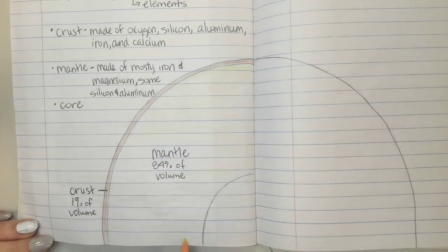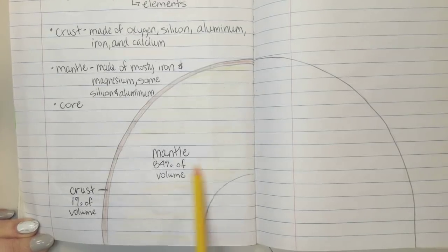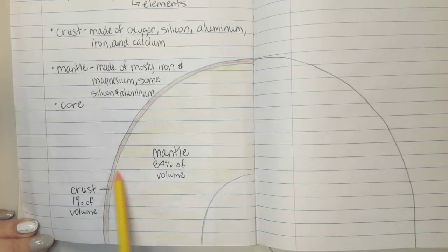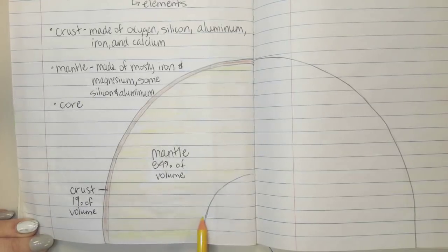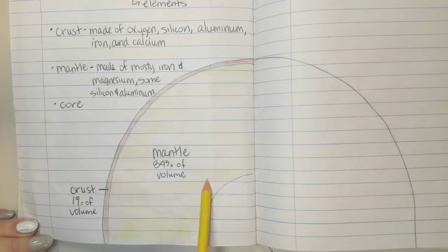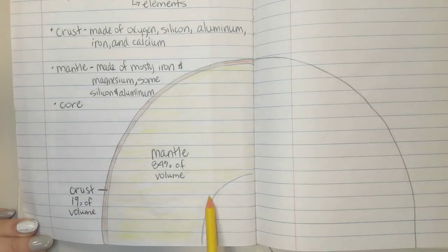Right now we're only coloring and drawing on page 2. The next video will cover page 3. The last layer, the innermost layer of the earth, is called the core.